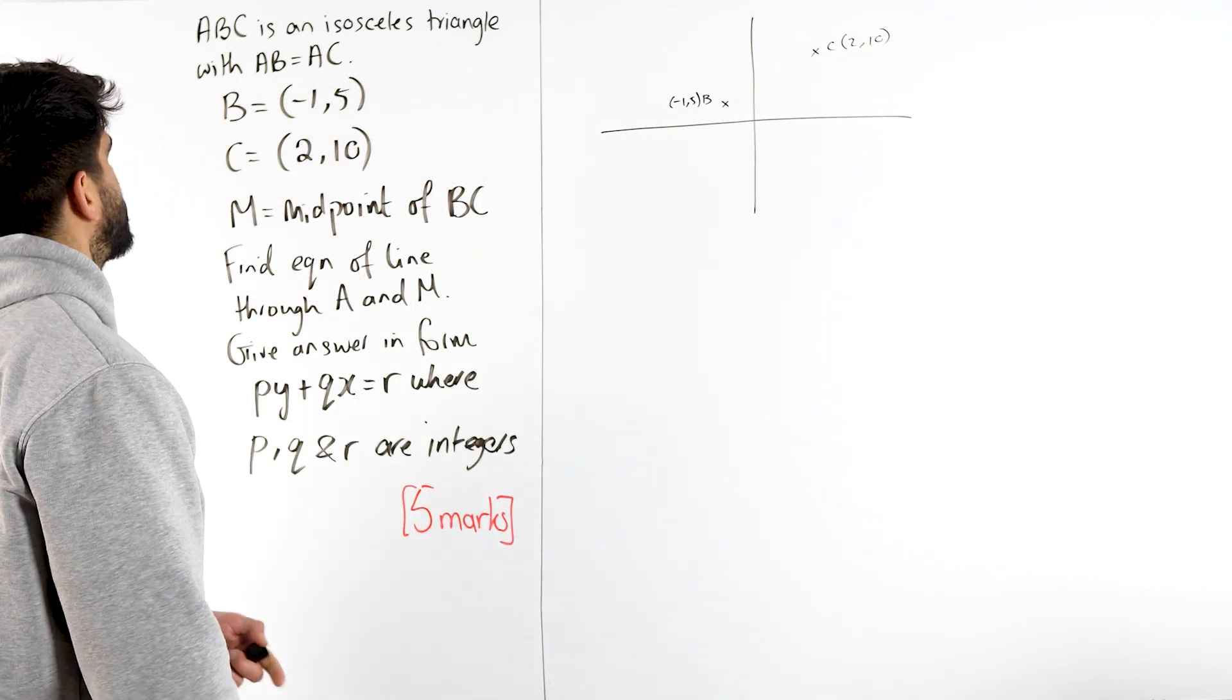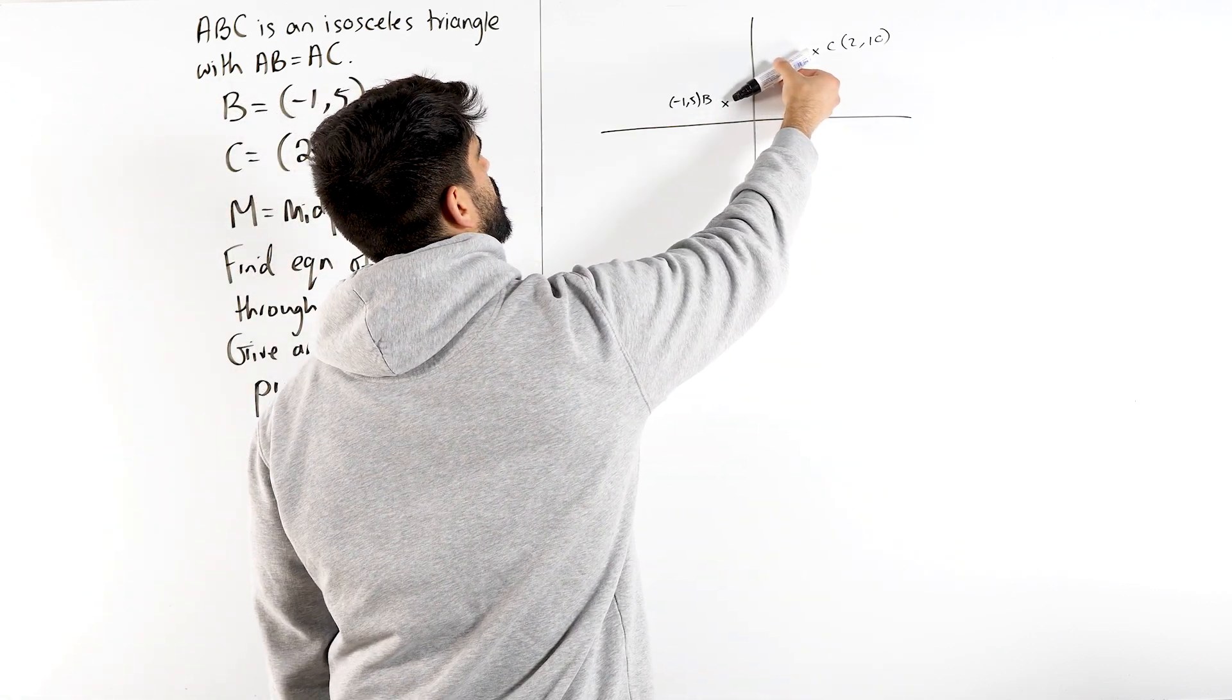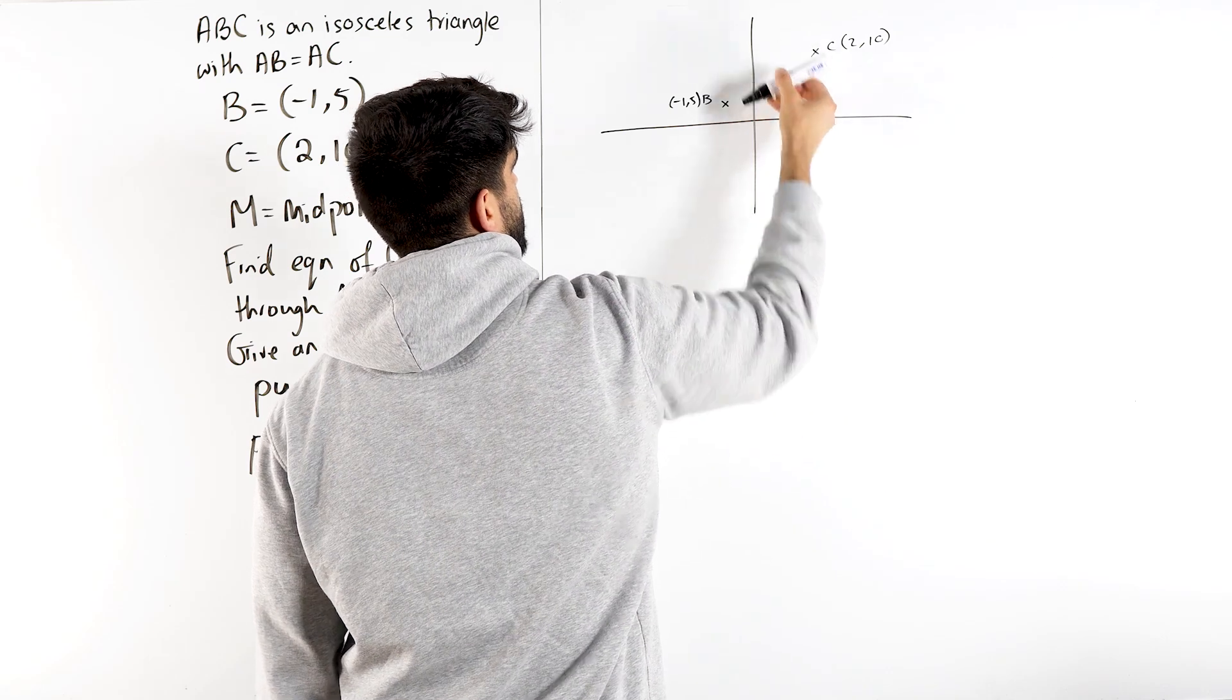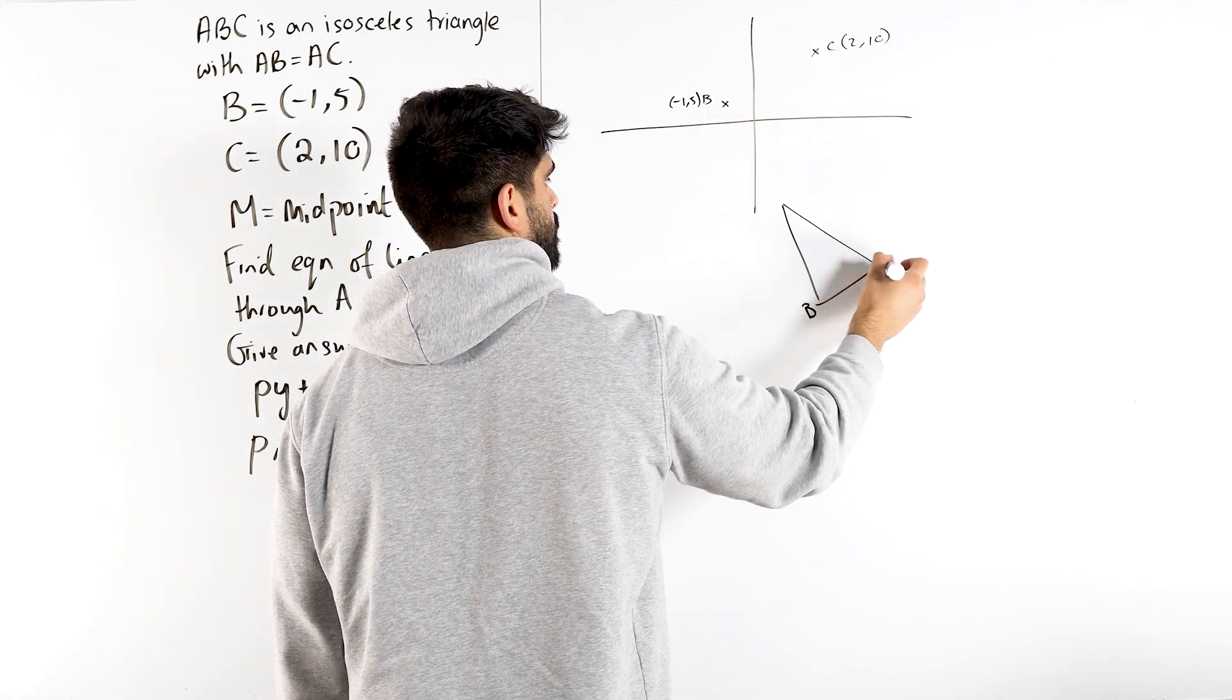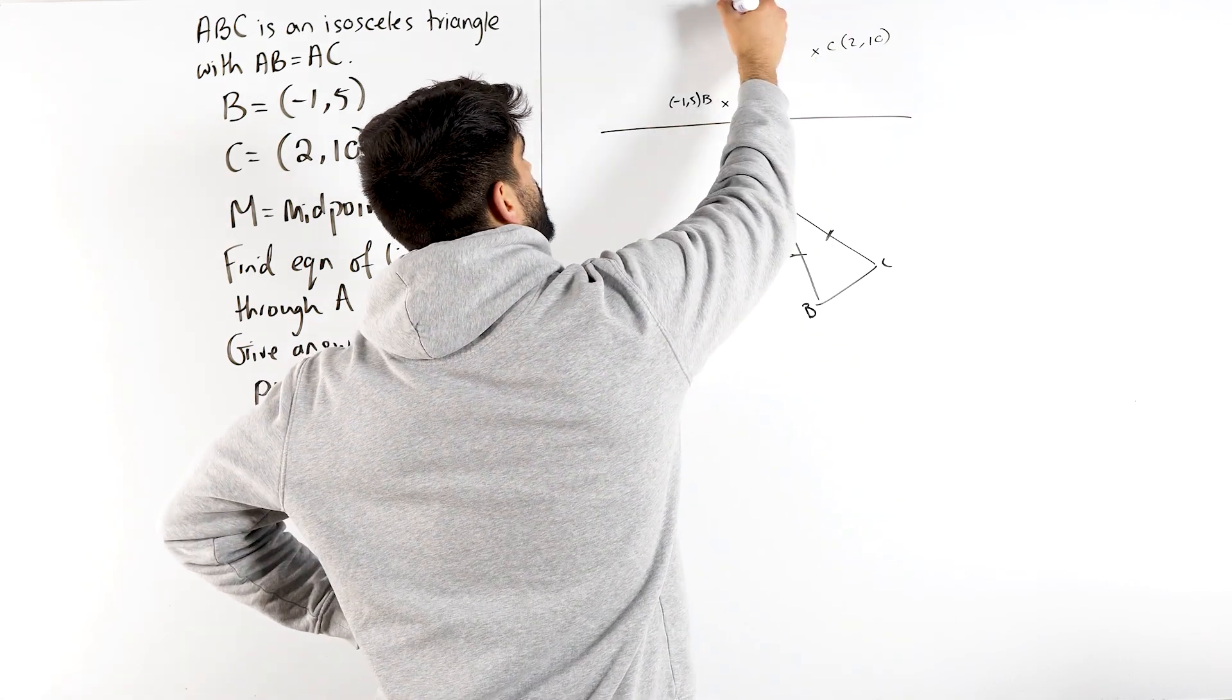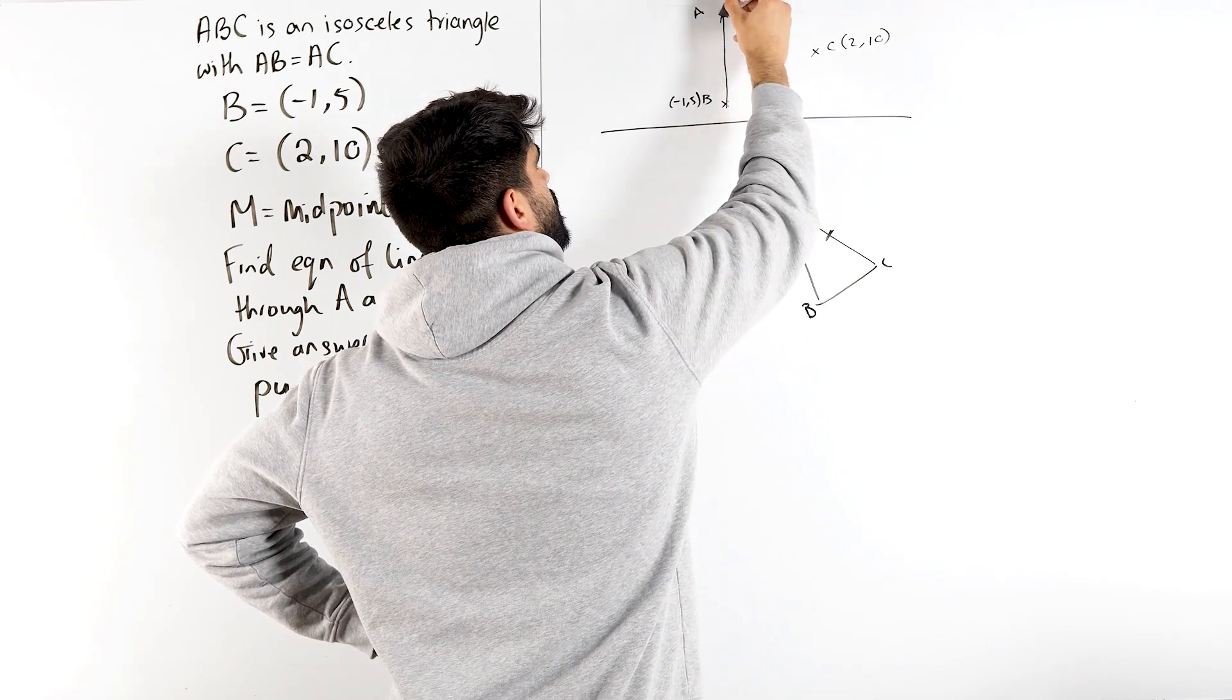Where would you guys put A so that we have an isosceles triangle where AB is AC? Well, these aren't the sides which are equal to any other side. It doesn't say BC is equal to any other. So it must mean that the triangle looks something like this. That these are the same and we don't really know anything about this. So I'm going to put A over here somewhere and we have something like that.